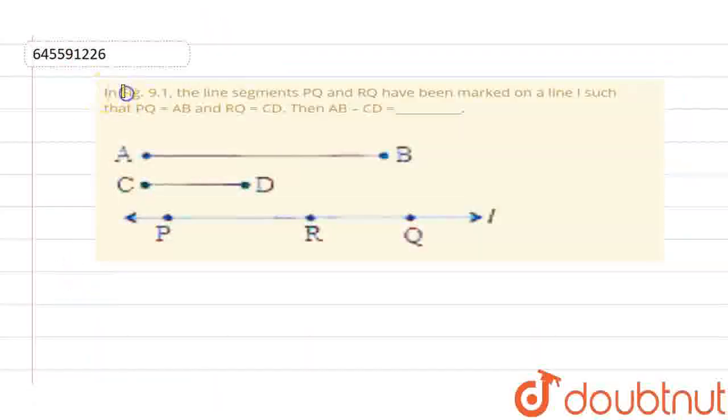The question given to us is shown in figure 9.1. The line segments PQ and RQ have been marked on a line L, such that PQ is equal to line AB and the value of RQ is equal to CD. Finally, we need to find AB minus CD.